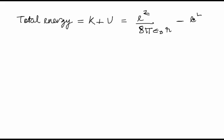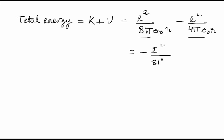We see that the second term is double the first term, so the total energy that we get is negative, which equals −e²/(8πε₀r). We have thus shown that the total energy is negative, which was the significance asked in the question. This is the total energy we have calculated.